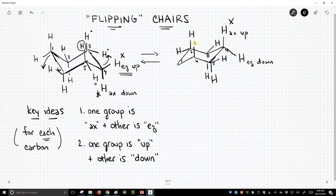Axial and equatorial get switched. Up and down do not change in a flip. So this is a change in the conformation.